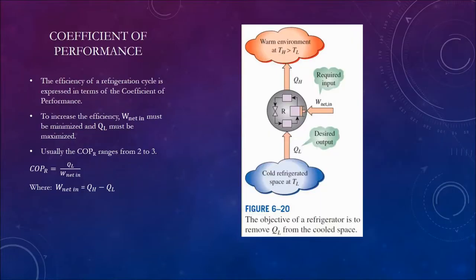Coefficient of performance. The efficiency of the refrigeration cycle is expressed in terms of the coefficient of performance. To increase efficiency, the net work in must be minimized and the heat loss must be maximized. Usually the coefficient of performance of the refrigerant ranges from 2 to 3. The coefficient of performance equals the heat loss divided by the net work in, where net work in equals the heat gained minus the heat loss.